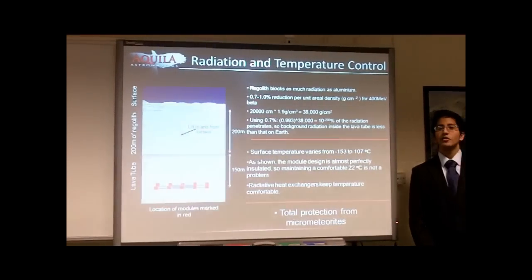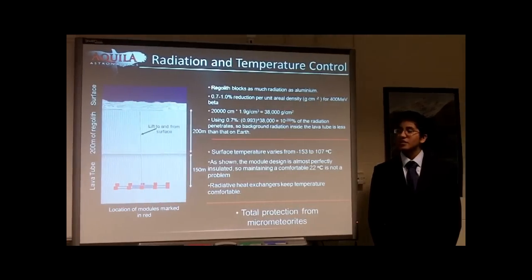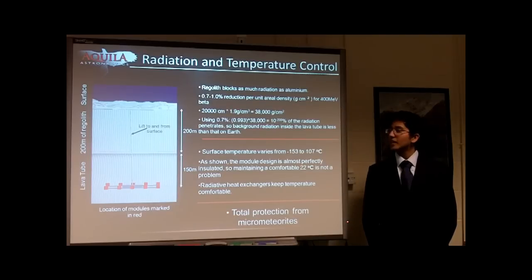Radiation levels on the Moon are 300 times those of Earth, temperatures are lethal at both extremes, and micrometeorites can be dangerous to both personnel and equipment. However, 3.5 meters of regolith provide ample protection against all three of these hazards, and the settlement can be heated by heaters or cooled by radiative heat exchangers as necessary.